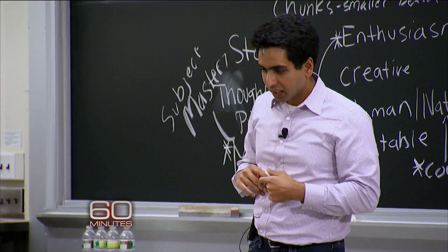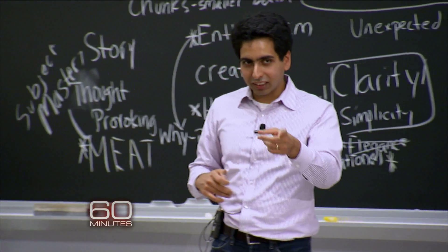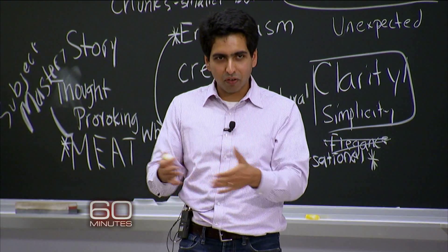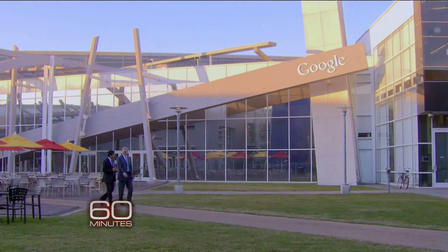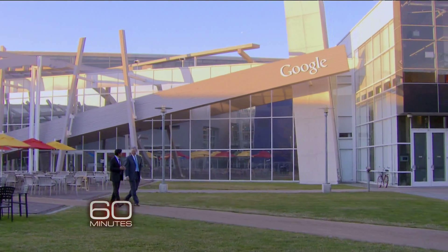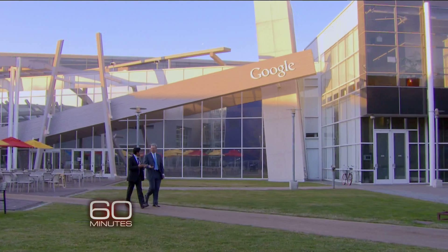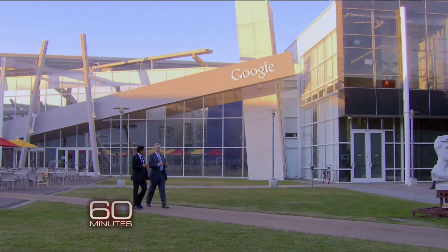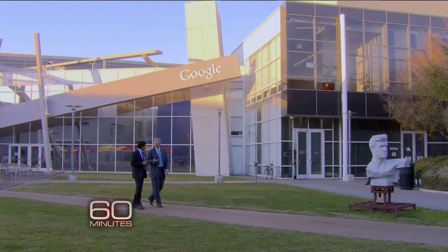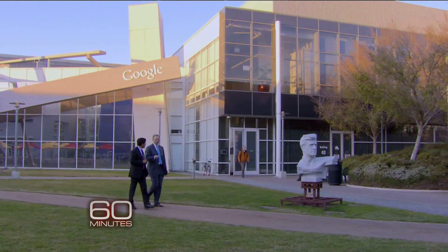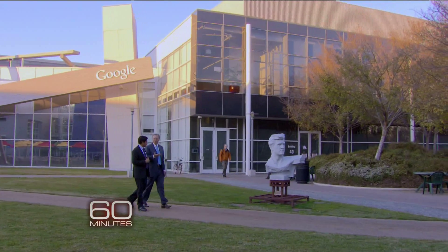Khan says they look at all that data and constantly make changes to their software platform. We can start fine-tuning things the way that Amazon might fine-tune their button to help you find the book you want, or like Netflix asks what's the right movie for you — we now get to do that with education. Eric Schmidt, the pioneering chairman of Google, says he's seen a lot of failed attempts to integrate technology into education, but says what Sal Khan is doing is different.